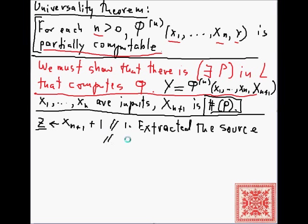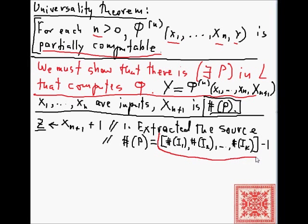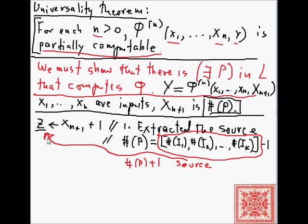Recall that the number of P is a Gödel number whose first component is the number of the first instruction, the second component is the number of the second instruction, and so on down to instruction k. Every program has a finite number of instructions. This is the source, and we need to extract it and put it in the value of Z. The number of P plus one gives us the source, which is now the value of Z.